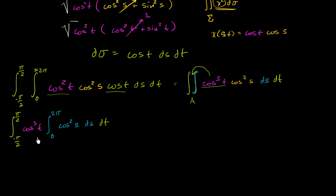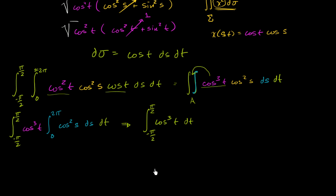We can view this outer sum as essentially a product. Since the s-integral has no t's involved, we can rearrange this using the commutative property and rewrite it as the integral from negative pi over 2 to pi over 2 of cosine cubed of t dt, times the integral from 0 to 2 pi of cosine squared of s ds. This will help us work through the trigonometry a bit more easily.